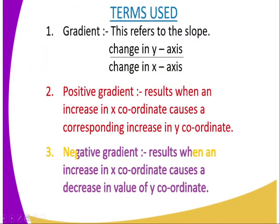And what is gradient? Gradient refers to the slope, the change in y over change in x. Number two, positive gradient results when an increase in x coordinate causes a corresponding increase in y coordinate. And negative gradient results when an increase in x coordinate causes a decrease in the value of y coordinate.